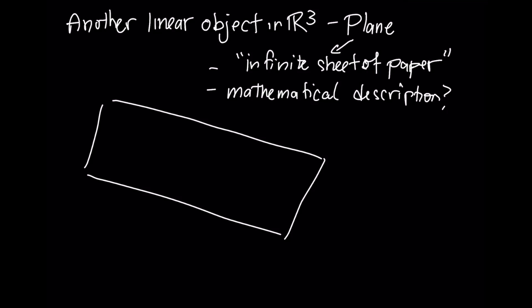The other important linear object in R³ is called a plane. A plane you should think of intuitively as an infinite sheet of paper. That isn't a great mathematical description, so how can we come up with a mathematical description? Use vectors.